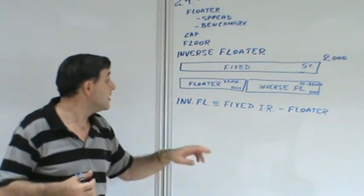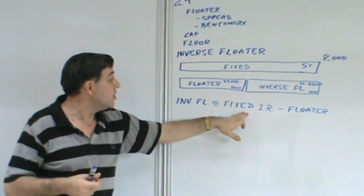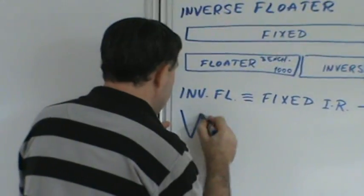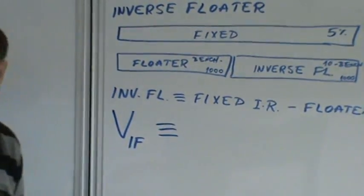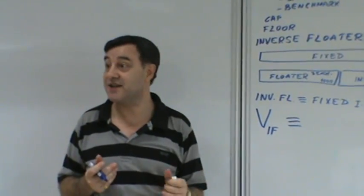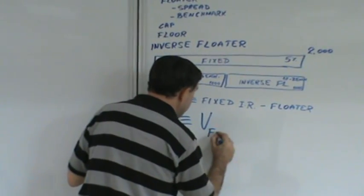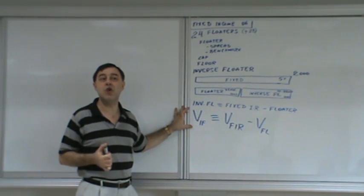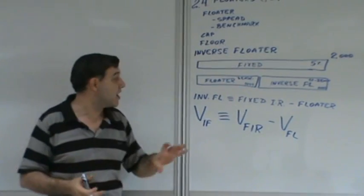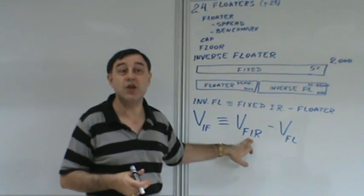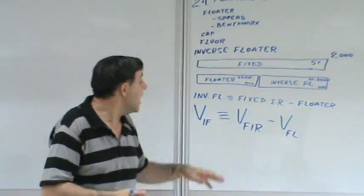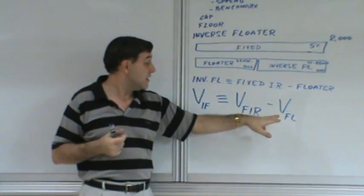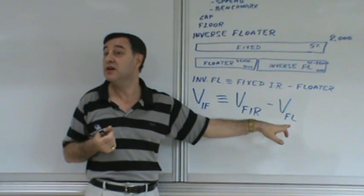Because of how it is constructed, by the principle of additivity, the value of the inverse floater is simply the value of the fixed interest rate minus the value of the floater. You don't value inverse floaters in any fancy way — you value the fixed interest rate, which is simple, and then value the floater itself. So valuation of inverse floaters essentially boils down to figuring out how to value a floater.